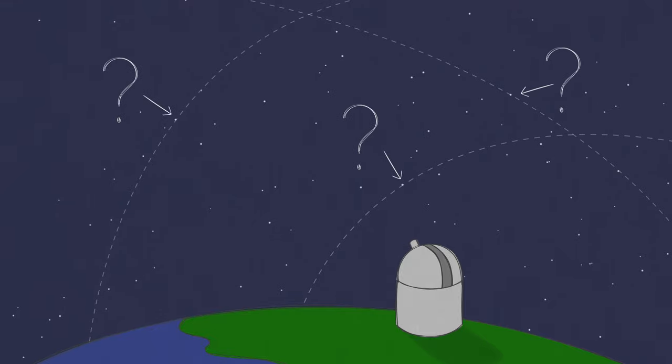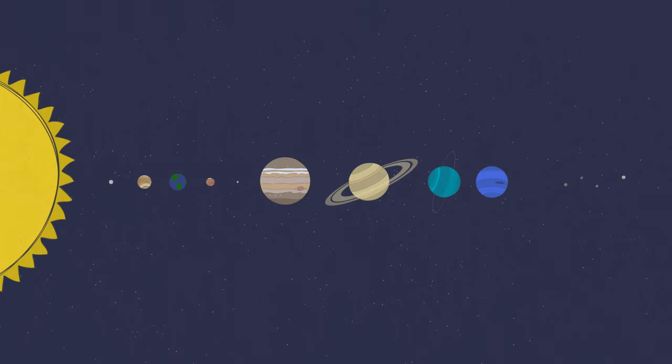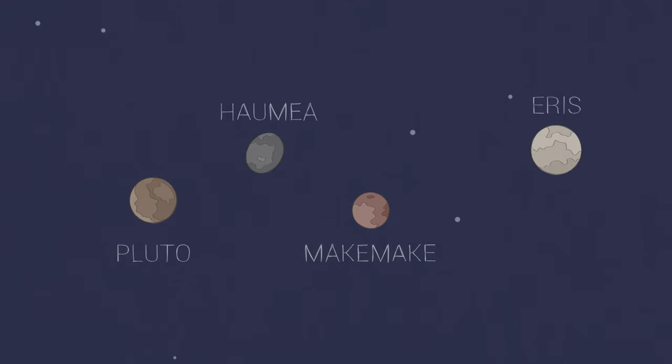There may be dozens of dwarf planets in our solar system. So far, we've classified just a handful, most of them very far away.